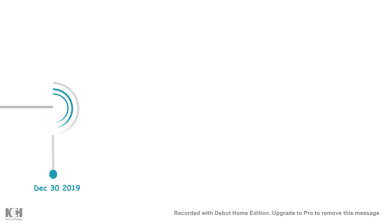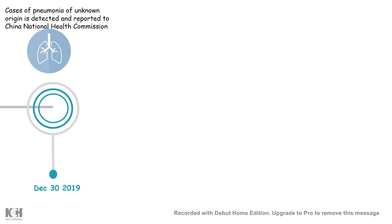The first incident took place on December 30, 2019, where some cases of pneumonia of unknown origin were detected all across China, especially in the town of Wuhan, and it was reported to the Chinese National Health Commission.